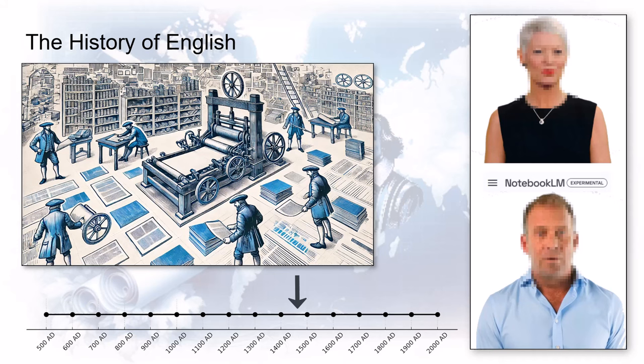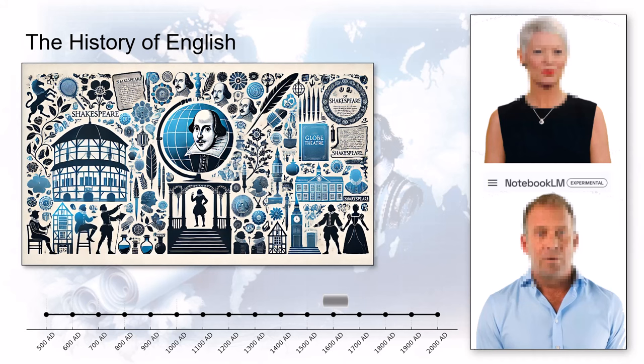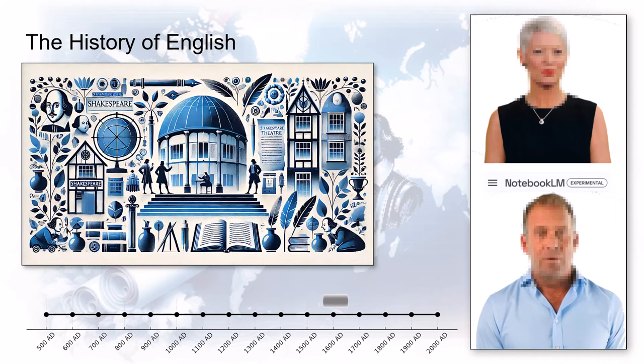All of a sudden everyone was rediscovering Latin and Greek — the Renaissance was obsessed with classical learning, and that spilled over into English. New words everywhere. And who better to lead that linguistic shopping spree than Shakespeare? A total wordsmith and innovator. We can thank Shakespeare for words we use all the time: eyeball, fashionable, even swagger. They feel normal now, but back then, totally groundbreaking.